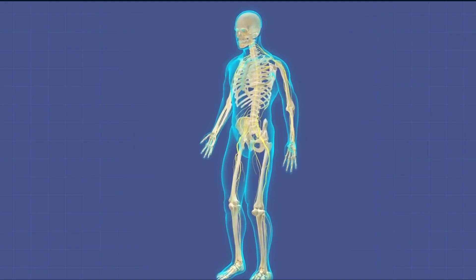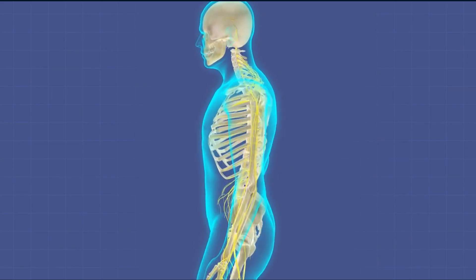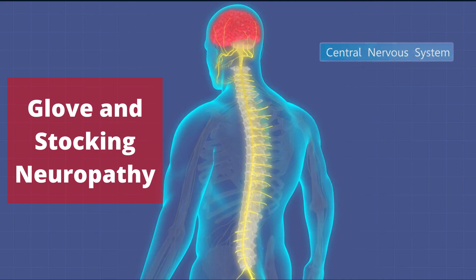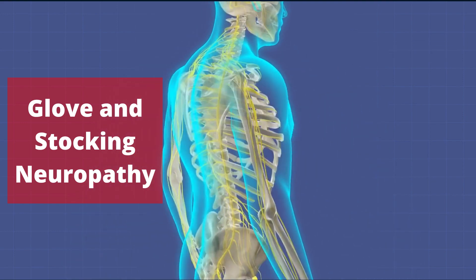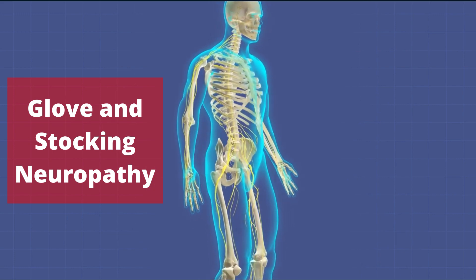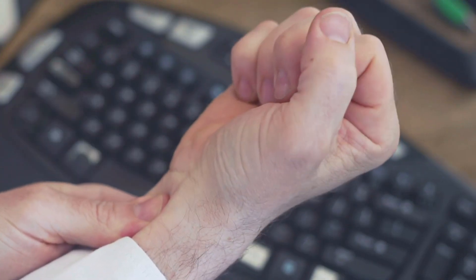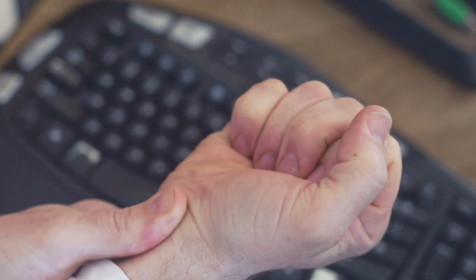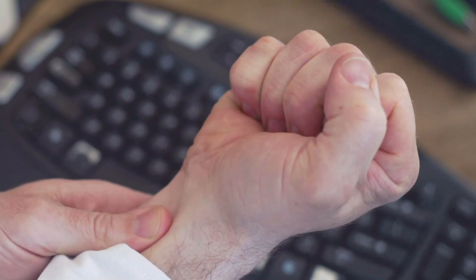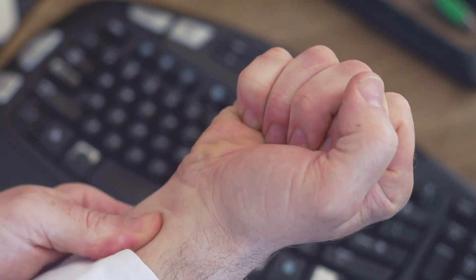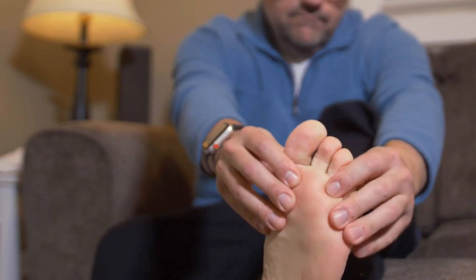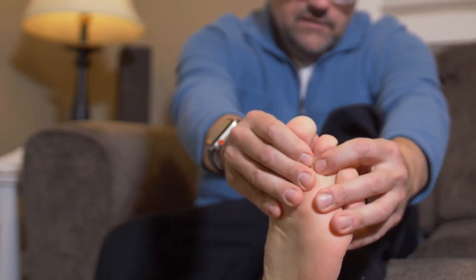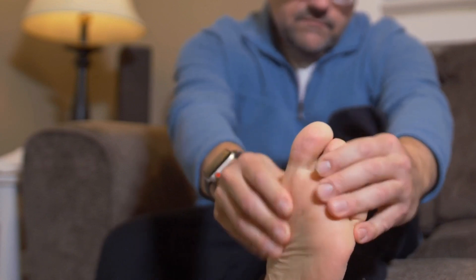If diabetes affects vessels to the nerves supplying your hands or feet, one may suffer from diabetic neuropathy — or what doctors call glove and stocking type of neuropathy. Signs and symptoms of peripheral neuropathy are often worse at night and may include numbness or reduced ability to feel pain or temperature changes, tingling or burning sensation, sharp pains or cramps, and serious foot problems such as ulcers, infections, and bone and joint pain. This is why it is super important for diabetics to examine their hands and feet regularly for sores and infections, as they might not even feel it.